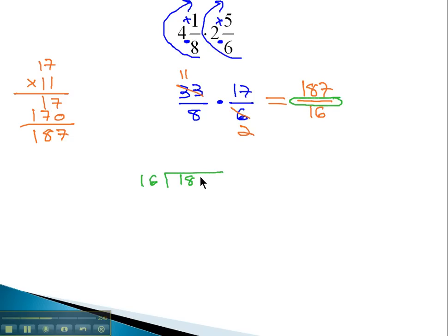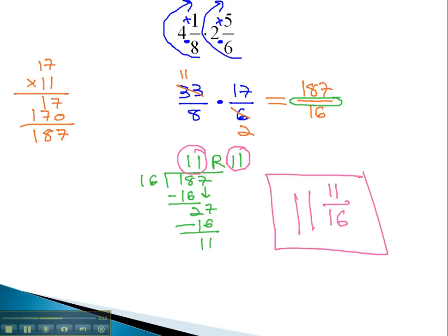16 into 187. 16 goes into 18 once, so we'll subtract 16, bring down the 7. 16 goes into 27 once as well. 1 times 16 is 16, and we get 11. It's kind of interesting. We have 11 with a remainder of 11, and so we convert that to a mixed number. 11, the whole number, and then the remainder becomes my new numerator. 11 and 11 sixteenths for our final solution.